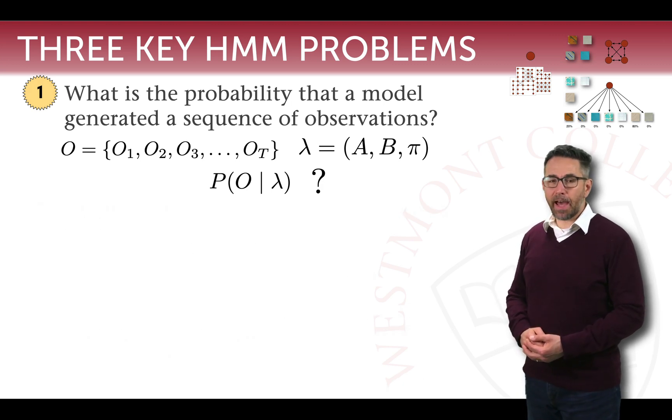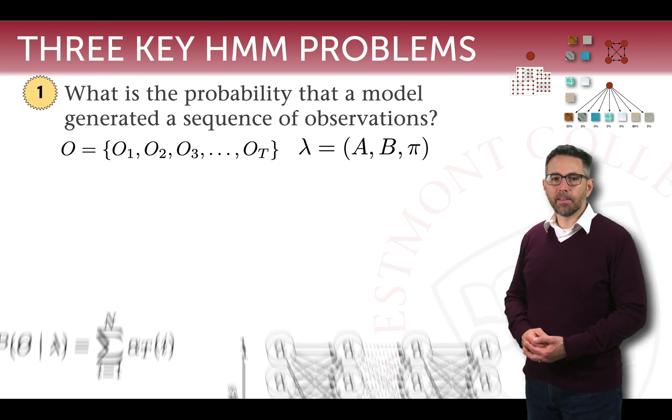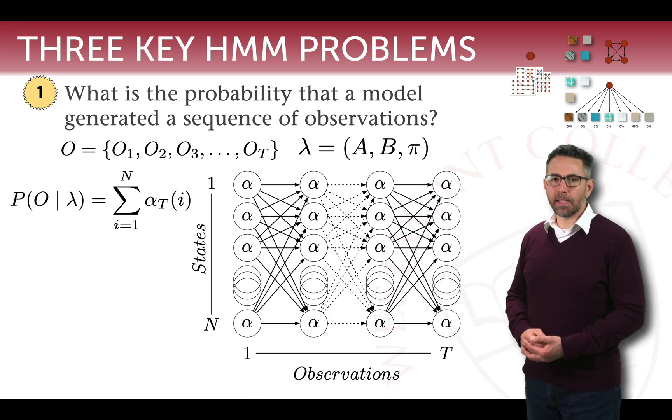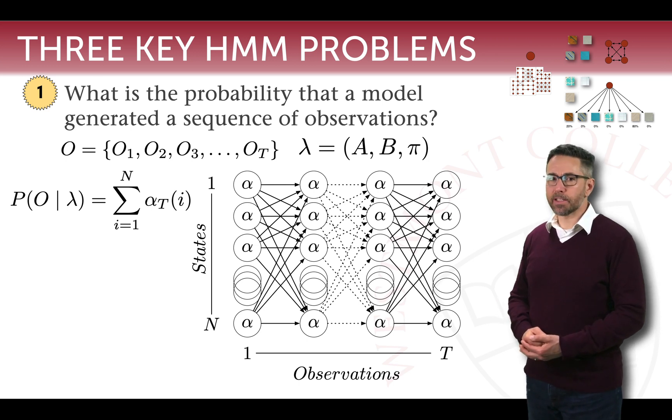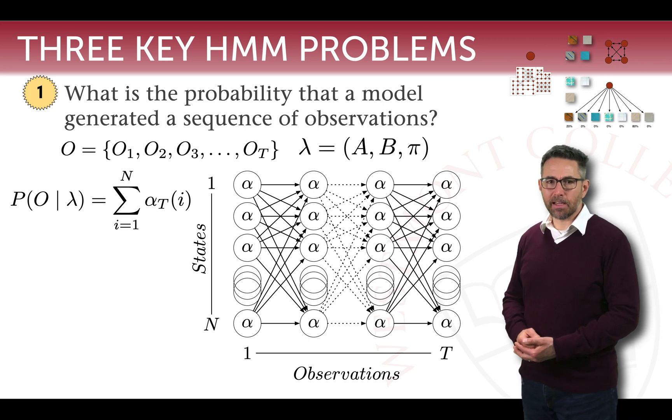The key to answering what is the probability of seeing observations given your model of your apartment was something called the forward-backward algorithm. What we developed was a solution to the question of what is the probability of a sequence of observations given lambda, and that was solved by summing over all the possible states the value of the variable alpha at the final step capital T of our observations.